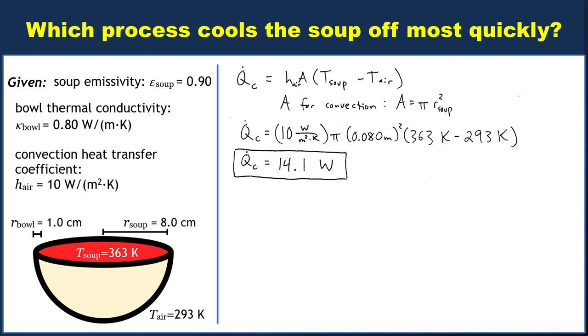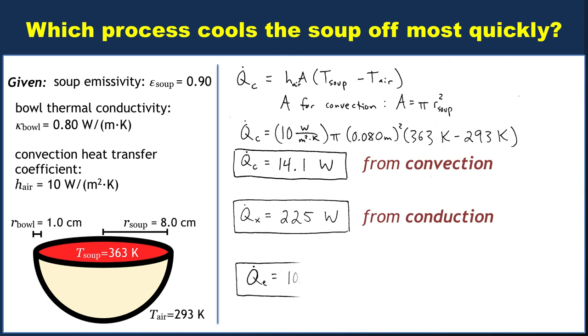So just to be clear, that's from convection. The power associated with conduction was 225 watts, and the power associated with radiation was 10.3 watts. So clearly in this case, conduction is by far the most efficient process. It has the largest power, that means that conduction is cooling off the soup the most.